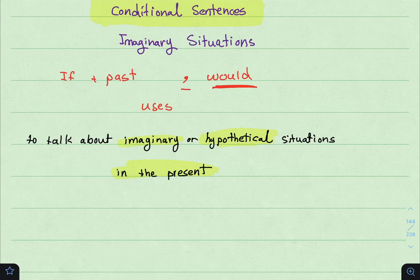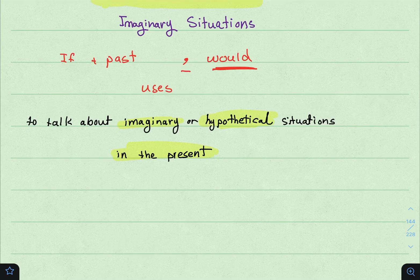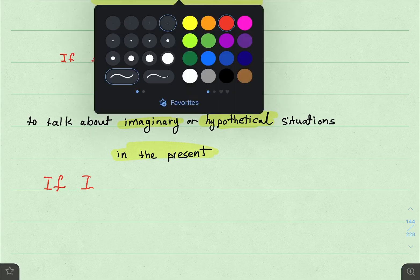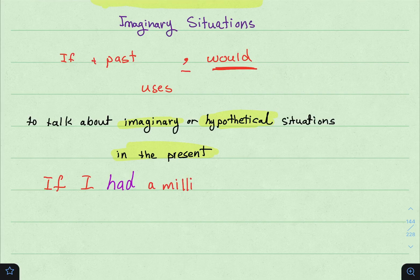So we use if plus the past, comma, would in the main clause to talk about imaginary or hypothetical situations in the present. I have a couple of examples. For example: if I had a million dollars — طبعاً you don't have a million dollars, so you are imagining: if you had a million dollars.